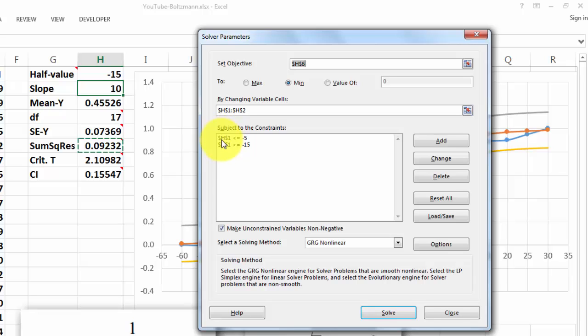That h1, the half value, should be less than or equal to minus 5 and greater than or equal to minus 15.